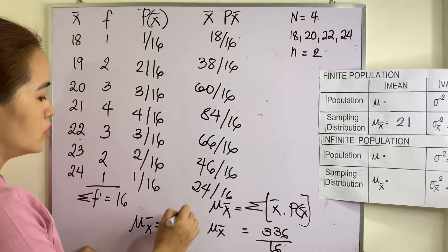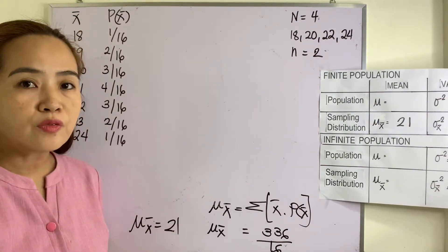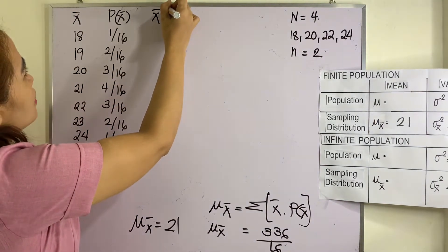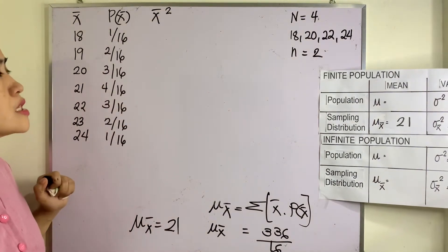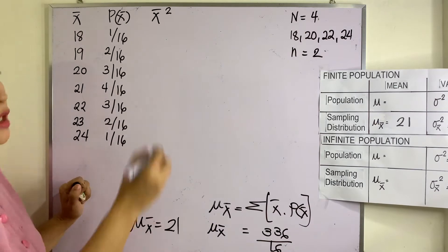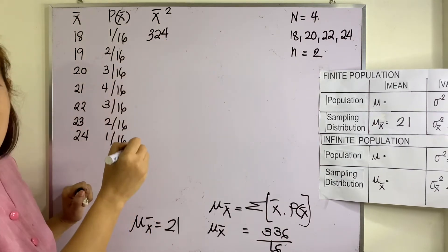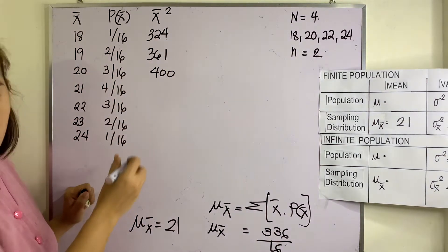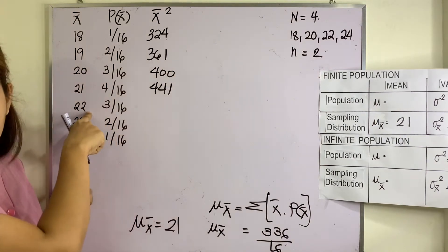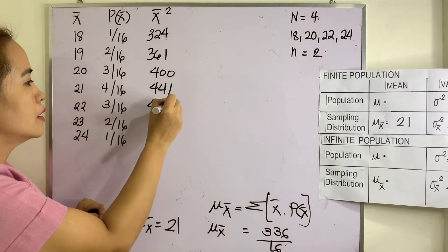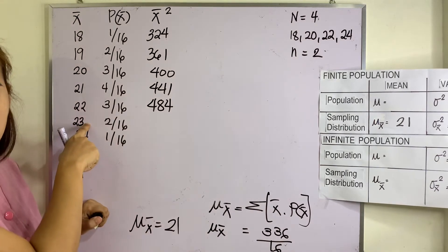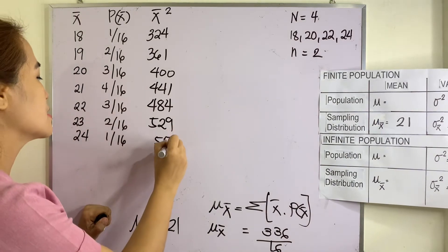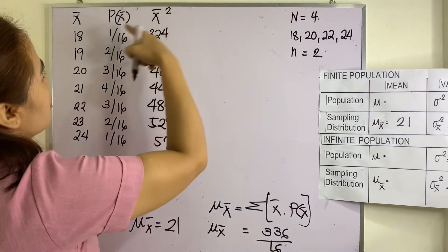The next step is to find the variance, since we already have the mean. In finding the variance, we first square the sample mean: 18 squared is 324, 19 squared is 361, 20 squared is 400, 21 squared is 441, 22 squared is 484, 23 squared is 529, and 24 squared is 576.